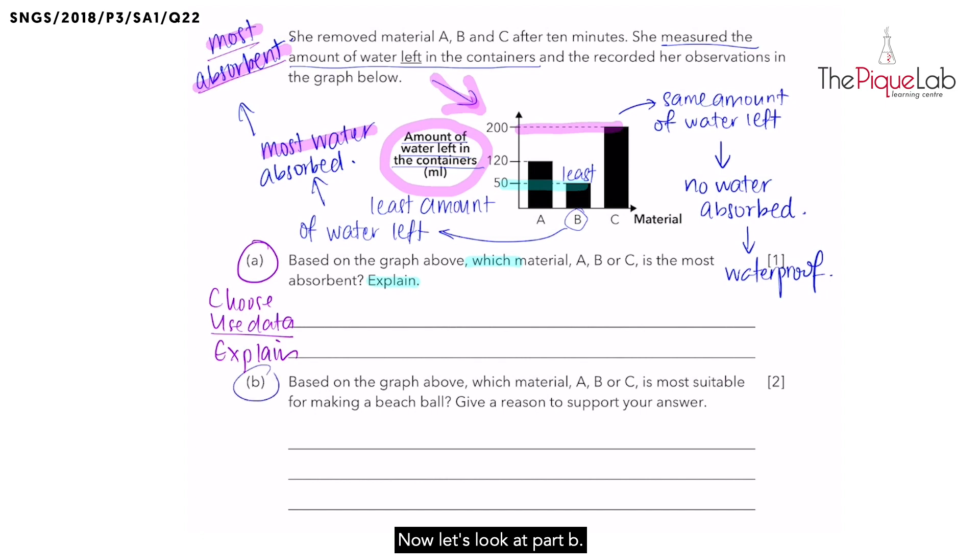Now, let's look at part B. Based on the graph above, which material A, B or C is most suitable for making a beach ball? And we need to give a reason to support our answer. Now, would you want your beach ball to be able to absorb water? No, right? It should not absorb water. Therefore, it has to be waterproof.